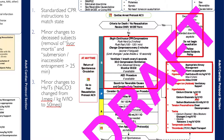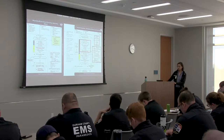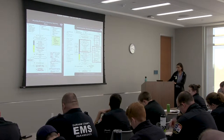Sodium bicarb was changed from one milliequivalent per kilogram IV/IO to a standardized dose of 50. Calcium gluconate is listed as one of the medications for hyperkalemia, but we're going to remove that because we don't carry it. That'll be a change that will happen that's not outlined in this protocol.